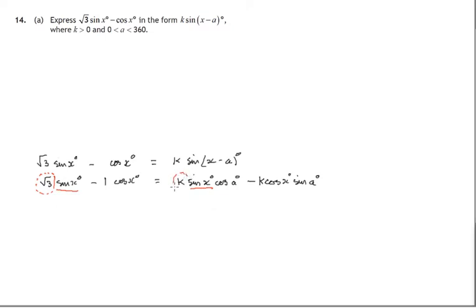On the right hand side, slightly more complicated, it's k times cos a. So we must have √3 being the same as k cos a. If we want these two expressions to be identical, then the number of sin x terms we've got, √3 of them, must be the same as k cos a. So k cos a equals √3.